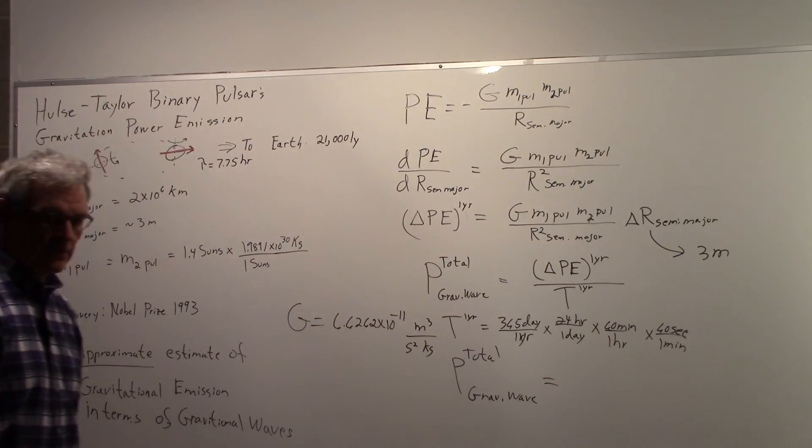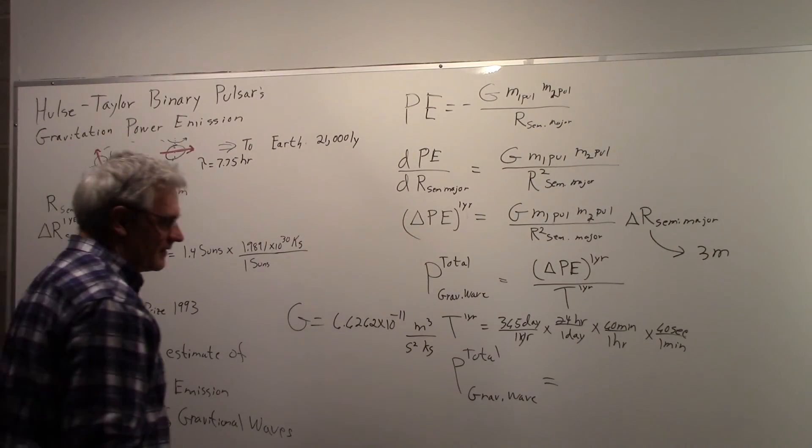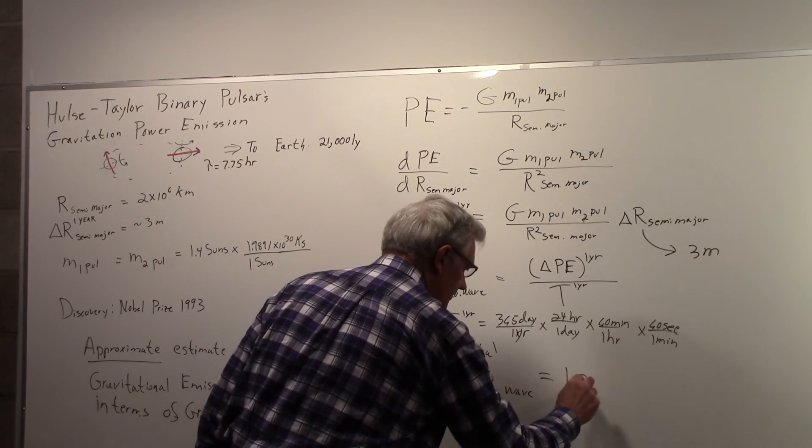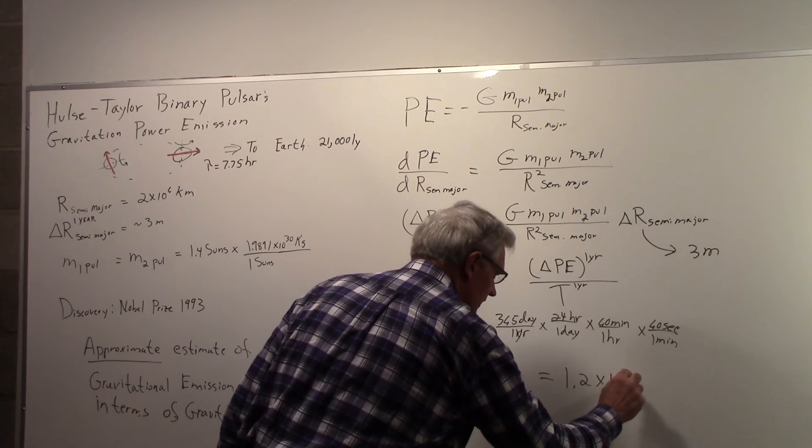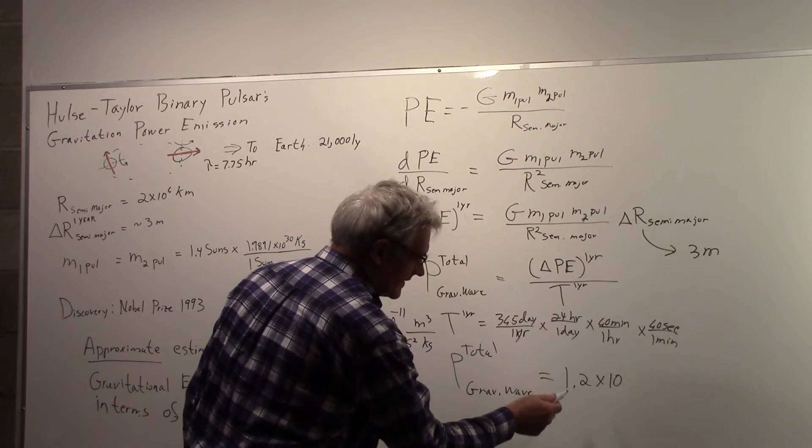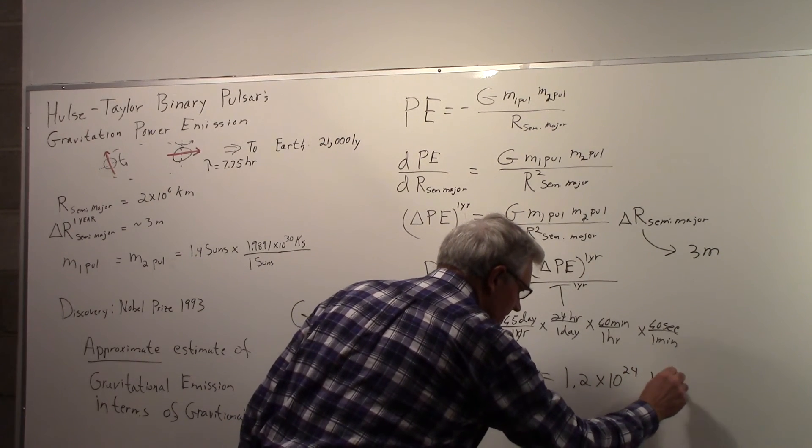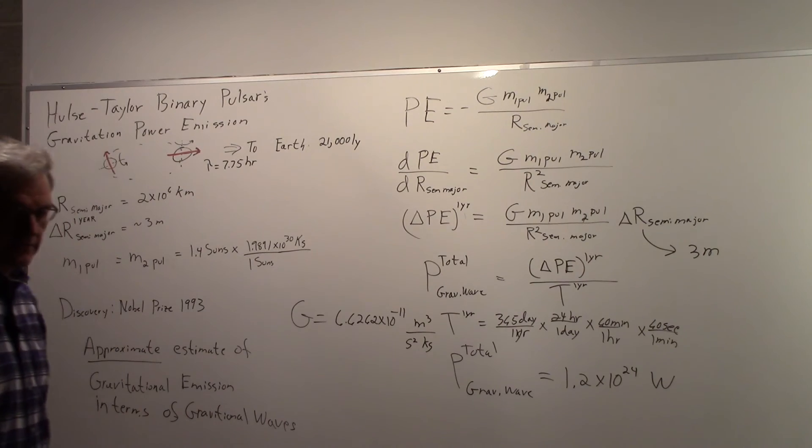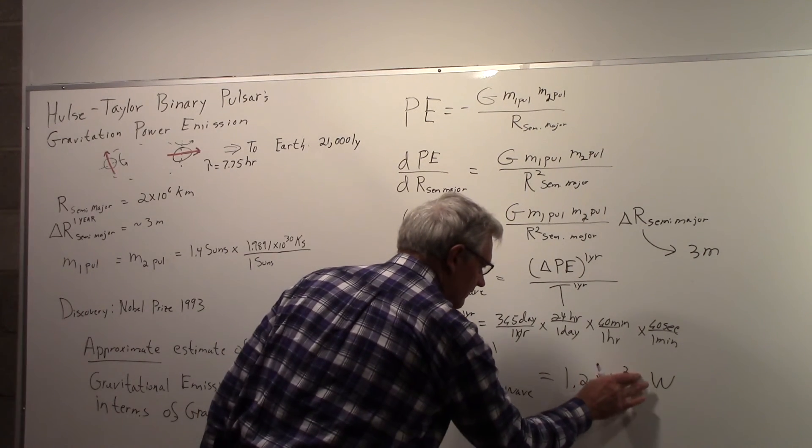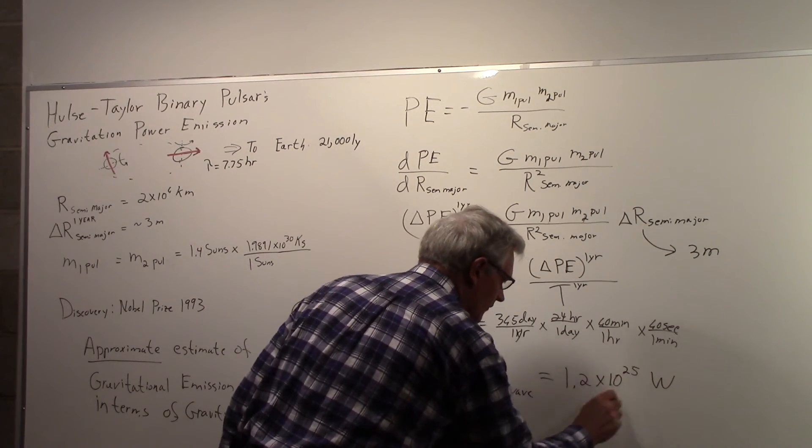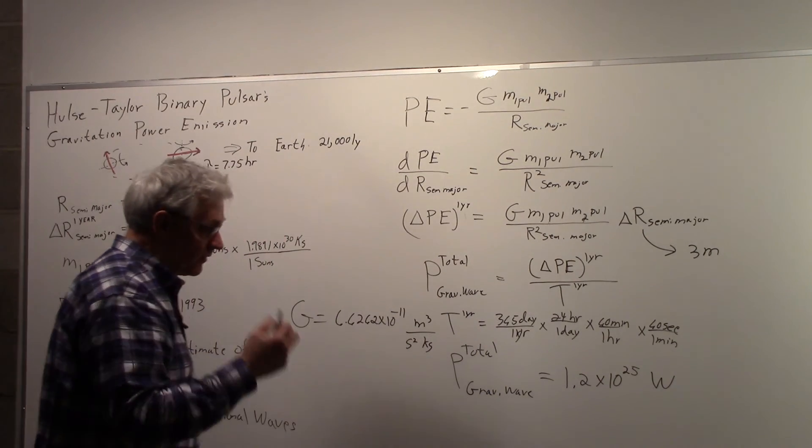So if you work all those numbers out, you get roughly 1.2 times 10... We're dividing joules by seconds, so we're going to have watts now. 1.2 times 10 to the 25 watts.